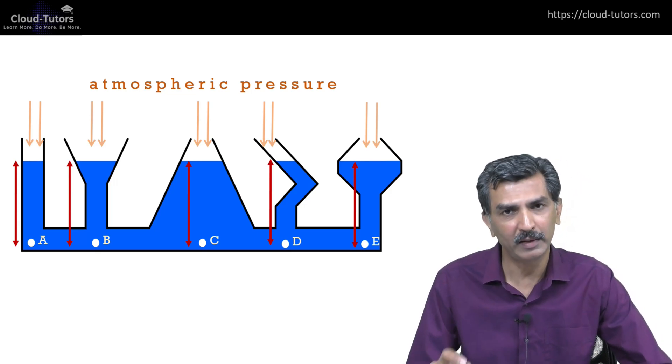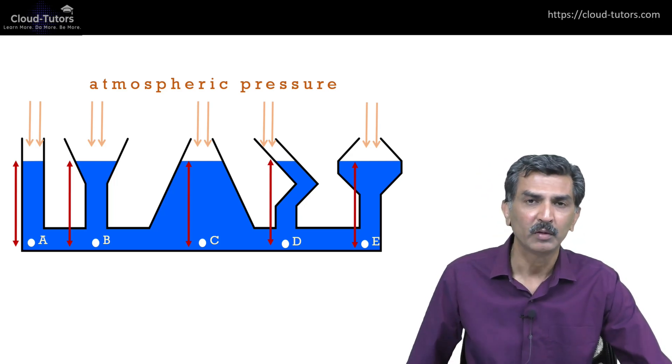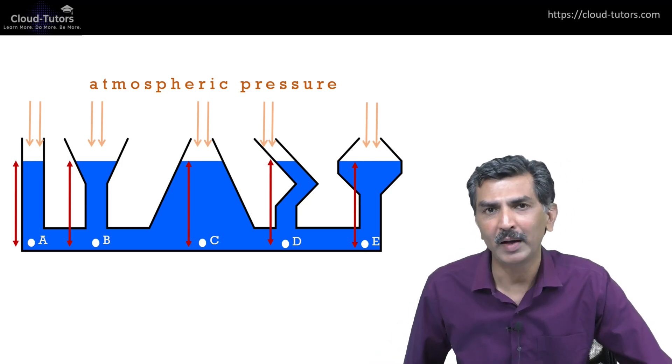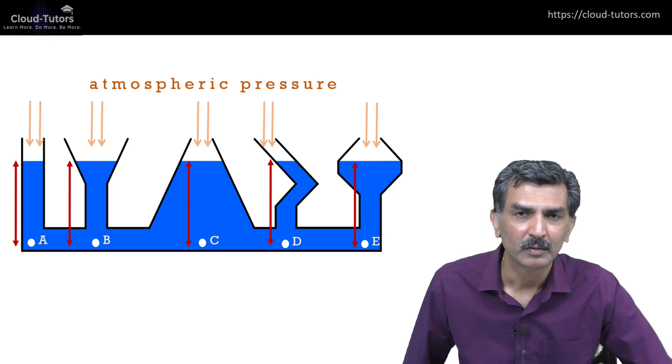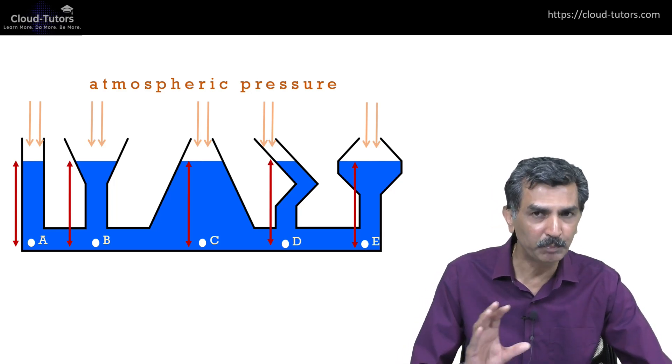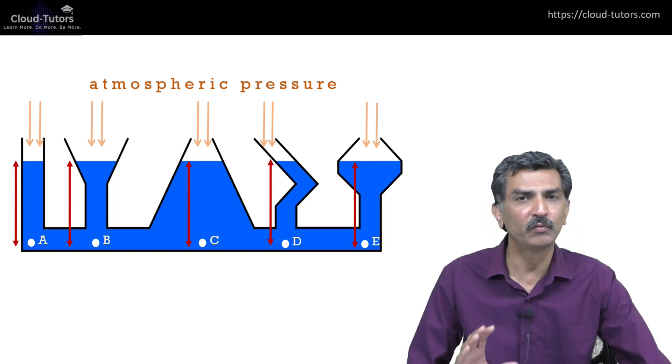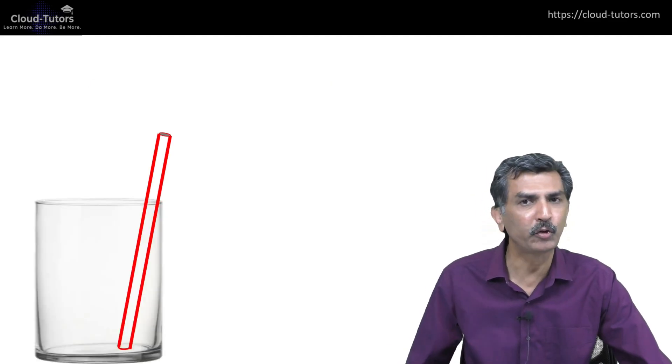The important thing here is to understand and appreciate that it doesn't matter whether the container is big or small, vertical or slanting, or has a different shape entirely. The only thing that matters to the pressure at the bottom of the vessel is the vertical height of the liquid column. Now having understood that, let's get to the straw.